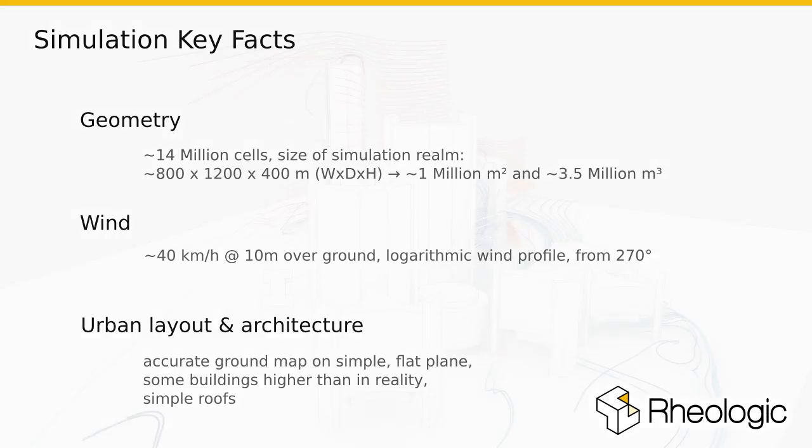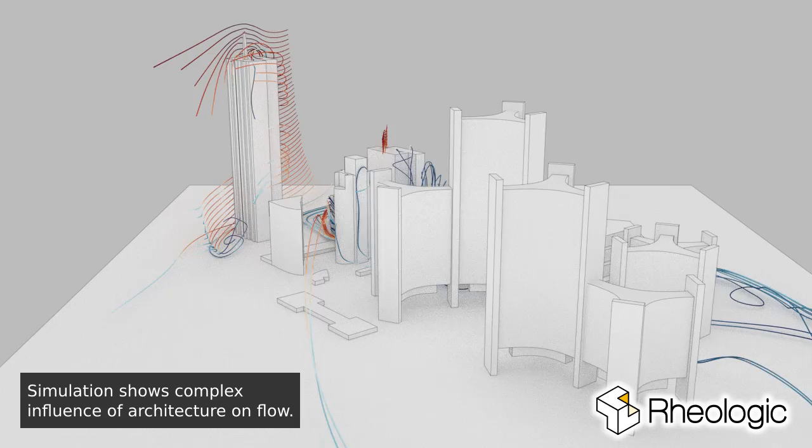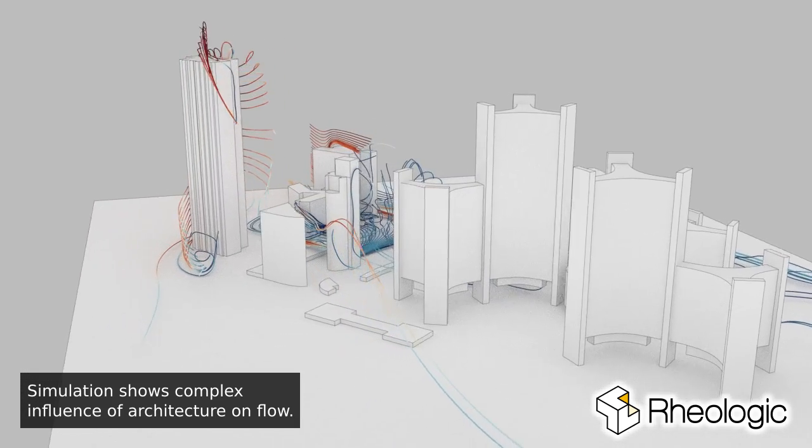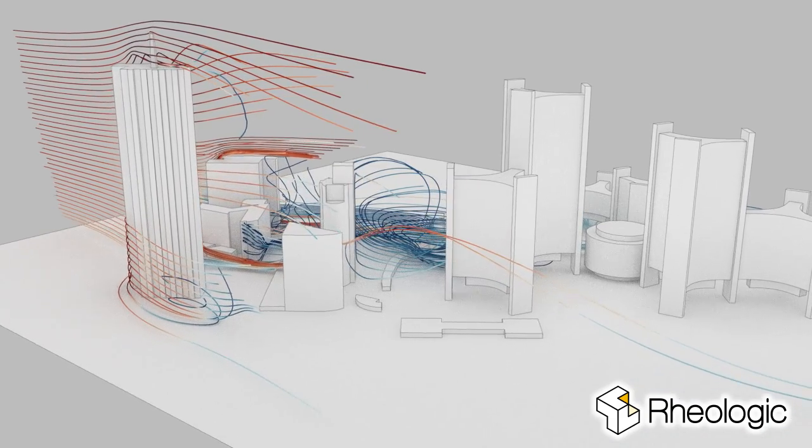Let's have a look at the results. The so-called streamlines show how the flow moves through the geometry in three dimensions. The colors indicate the wind speed.